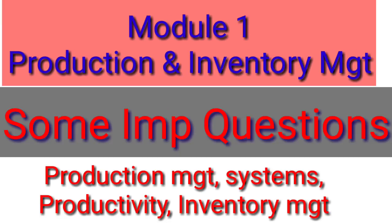If we talk about Module Number 1, it is on Production and Inventory Management. Three types of questions can be asked here. First is production management systems, then production management itself — you can be asked the importance of production management, the importance of production planning and control, the scope of production management, and continuous versus intermittent management systems.